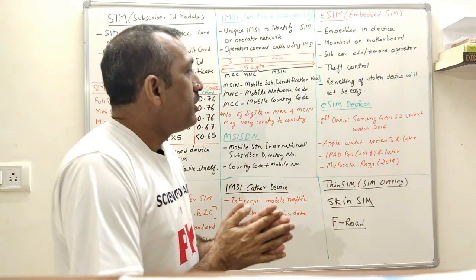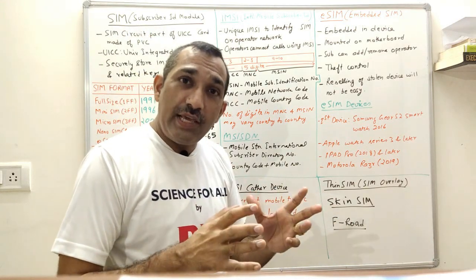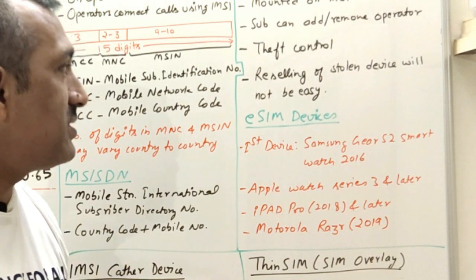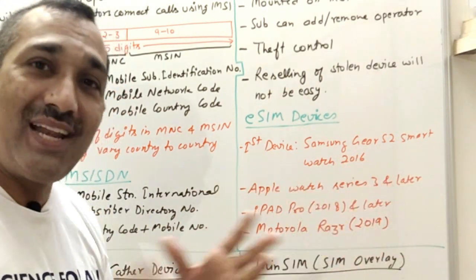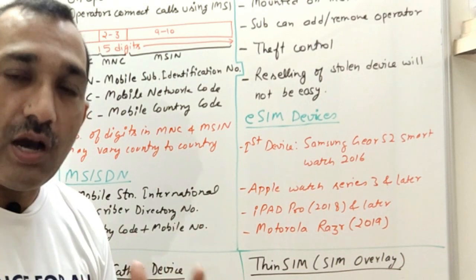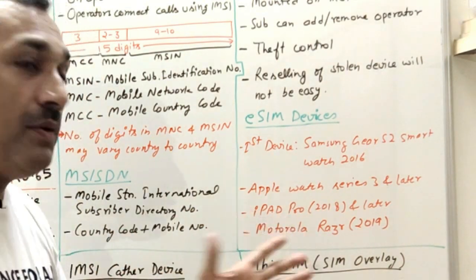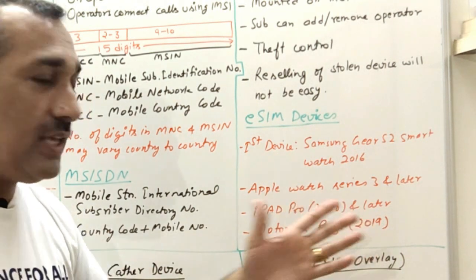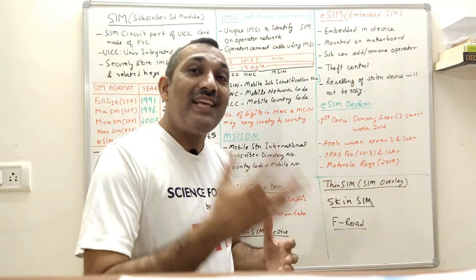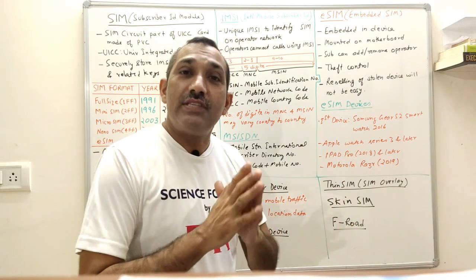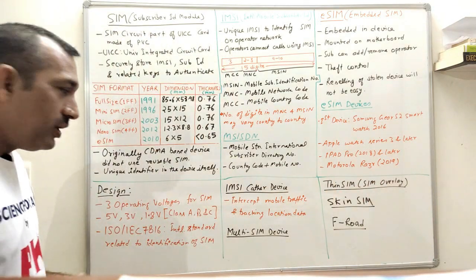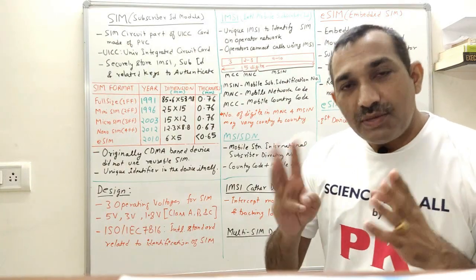There are commercially available eSIM devices in the market. The first was the Samsung Gear 2 smartwatch launched in 2016. After that came Apple Watch Series 3 and later models, iPad Pro launched in 2018, and the Motorola RAZR relaunched in 2019, which has no physical SIM and runs entirely on eSIM.